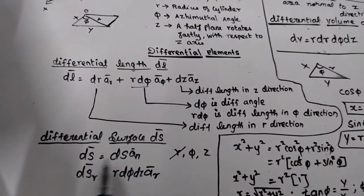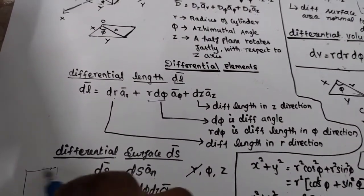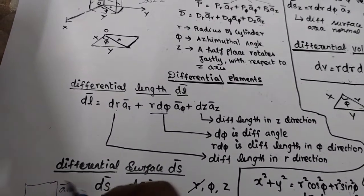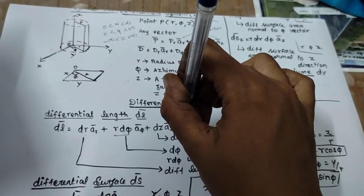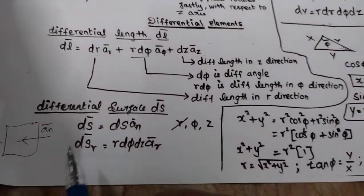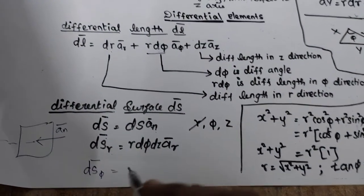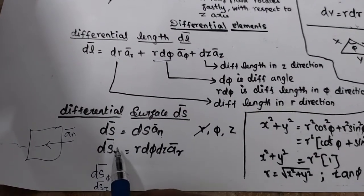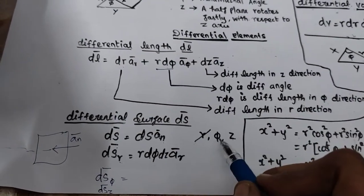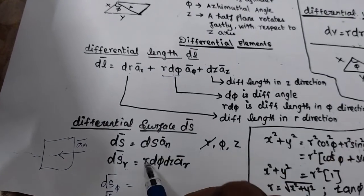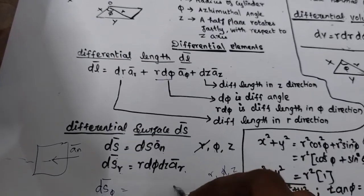For differential surface recap: dS vector = ds·AN, where AN is the unit vector normal — perpendicular to the particular surface, like a pen piercing a sheet of paper. DSR vector: cancel r, remaining variables phi and z give r·dφ·dz·ar. DSφ vector: cancel phi, remaining variables r and z give dr·dz·aφ. DSZ vector: cancel z, remaining variables r and phi give r·dr·dφ·az.